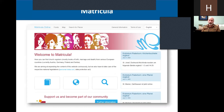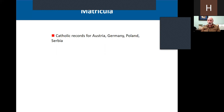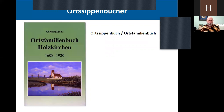Those were Protestant records. For Catholic records, Catholic archives are contributing those to a website called Matricula. They include Catholic records for Austria, Germany, Poland, and Serbia. They are also browsable there — they are not indexed, but the good news is that these are free. You can just go to that website and start browsing with no fee.